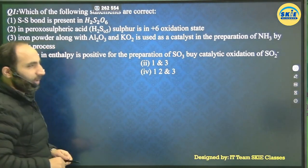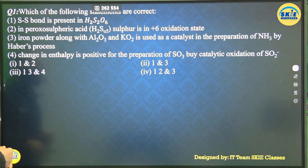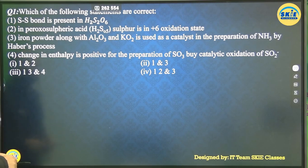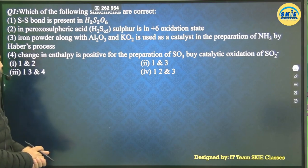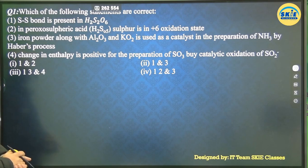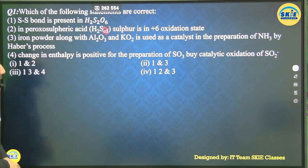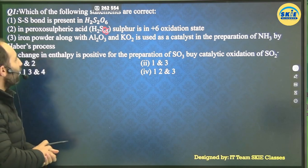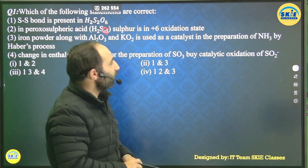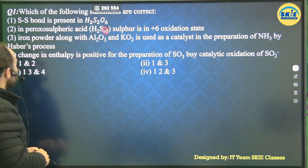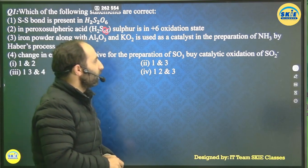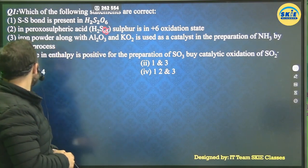Let's move to question number one — a statement-based question where more than one statement can be correct. Statements: (A) Sulfur-sulfur bond is present in H₂S₂O₆. (B) In peroxosulfuric acid H₂SO₅ (Caro's acid), sulfur is present in +6 oxidation state. (C) Iron powder along with aluminium oxide and K₂O is used as catalyst in the preparation of ammonia by Haber's process. (D) Change in enthalpy is positive for the preparation of SO₃ by catalytic oxidation of sulfur dioxide.